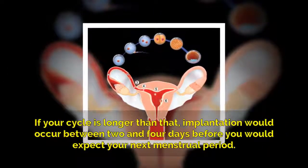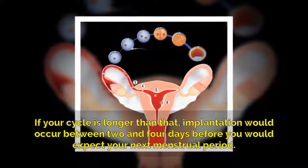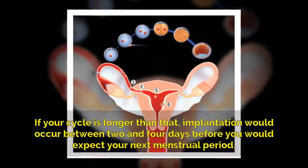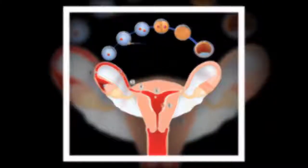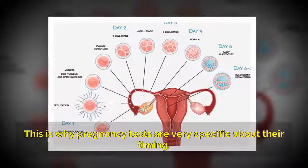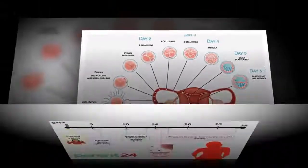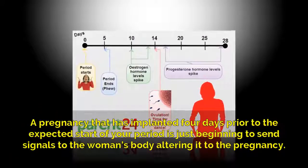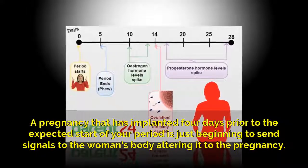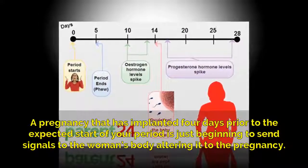If your cycle is longer than that, implantation would occur between 2 and 4 days before you would expect your next menstrual period. This is why pregnancy tests are very specific about their timing. A pregnancy that has implanted 4 days prior to the expected start of your period is just beginning to send signals to the woman's body alerting it to the pregnancy.